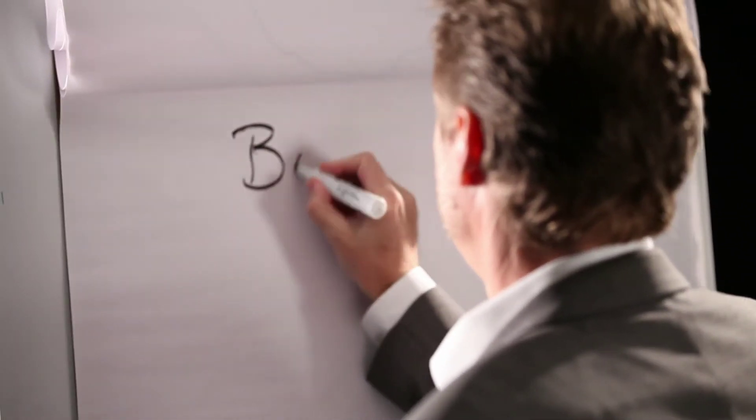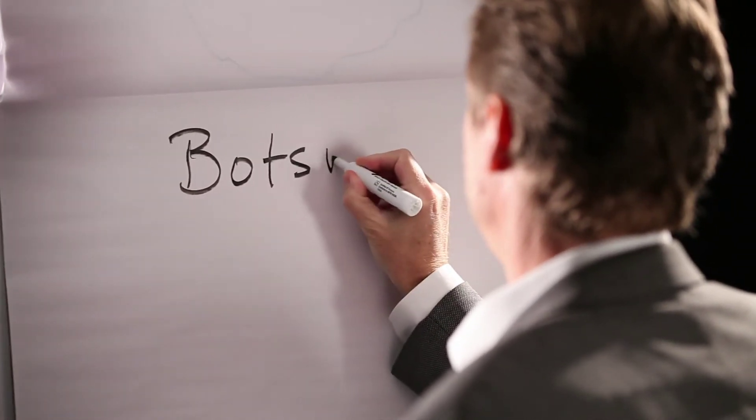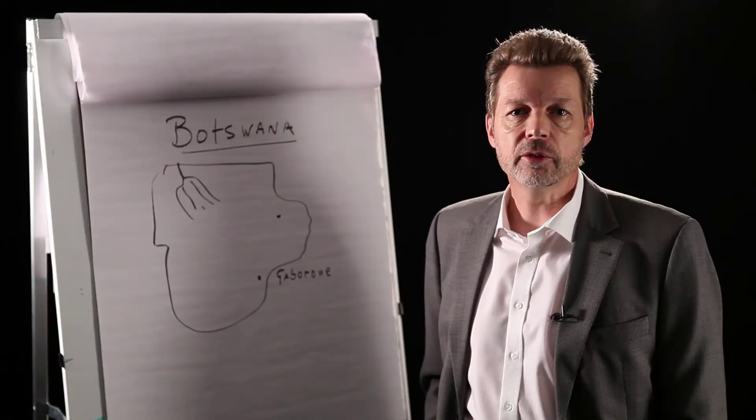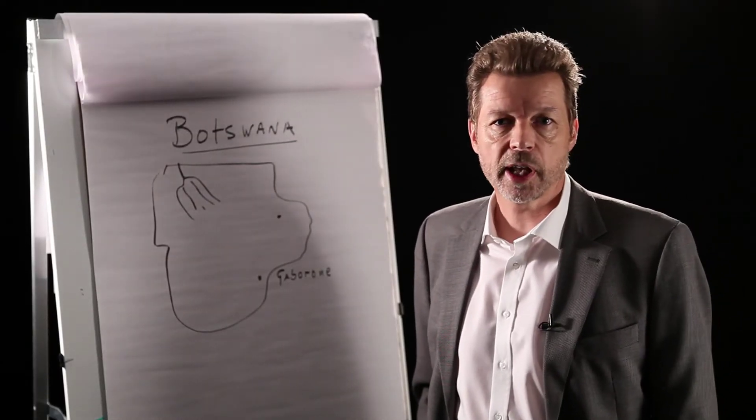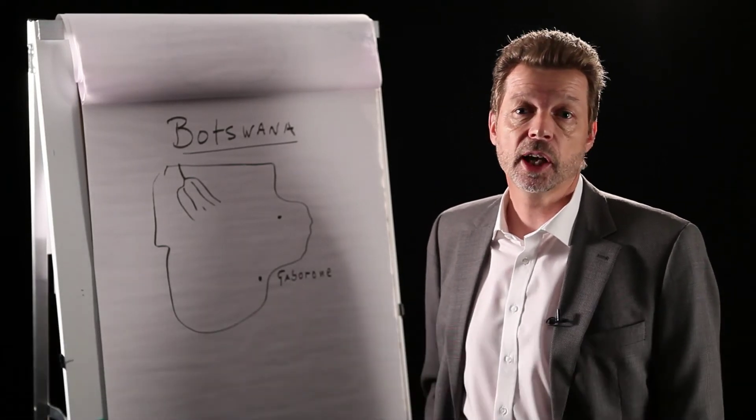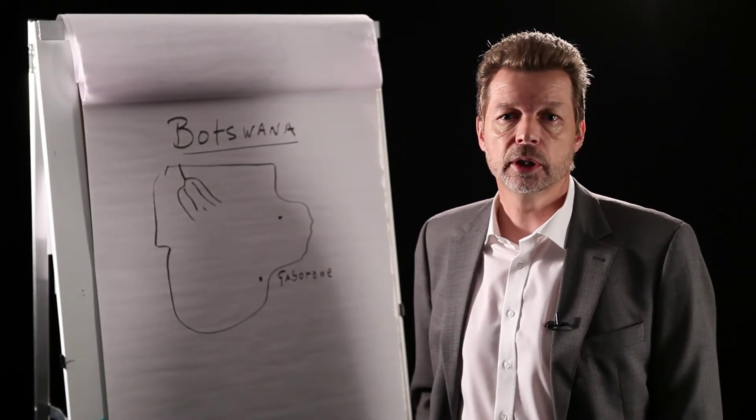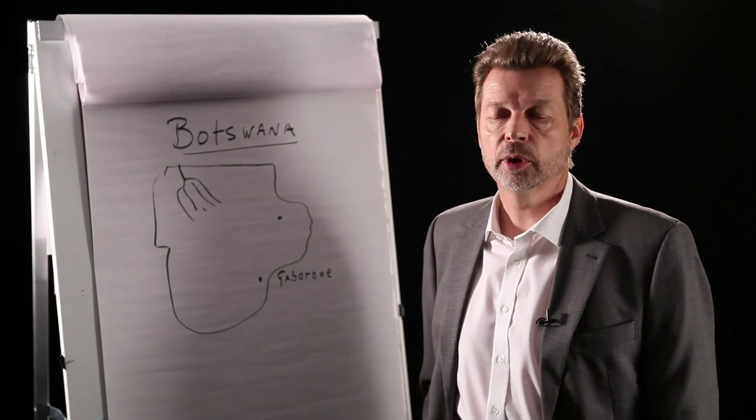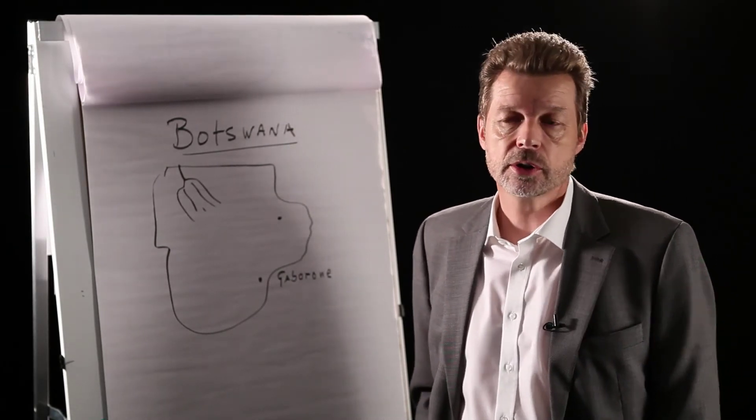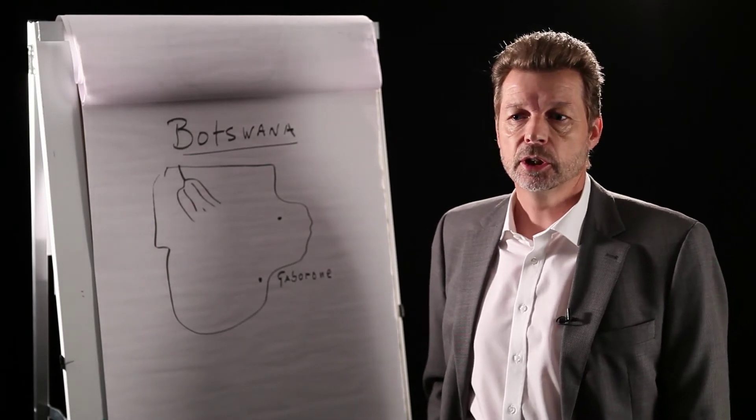Botswana is one of the countries that has done really well, where the revenues from diamonds, particularly, have been reinvested into manufactured capital. We talk about roads, buildings, schools, clinics, as well as in building up your social and human capital by way of skills and into knowledge investment. So they've done really well.